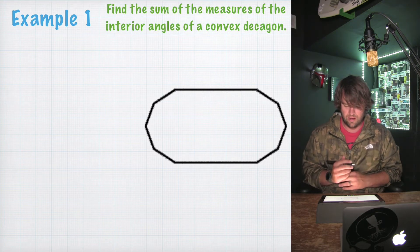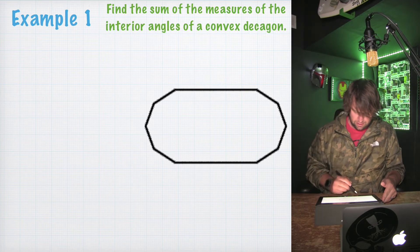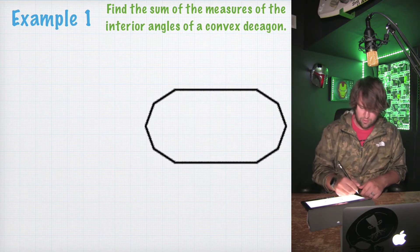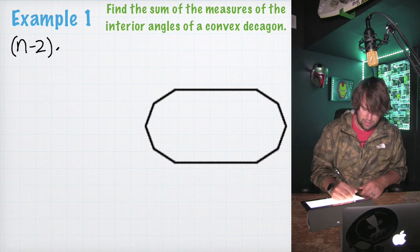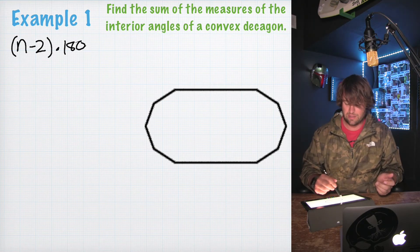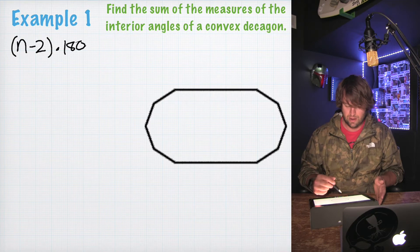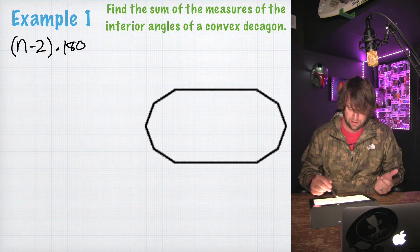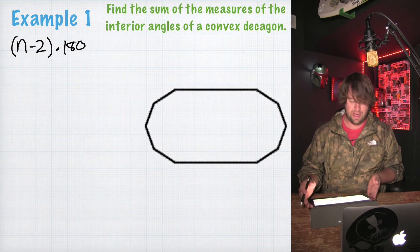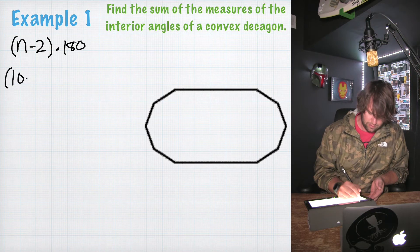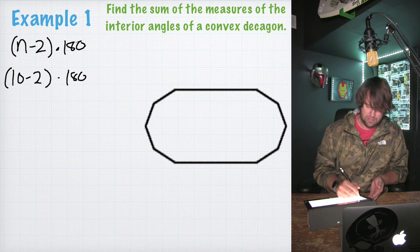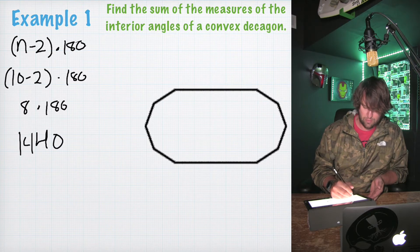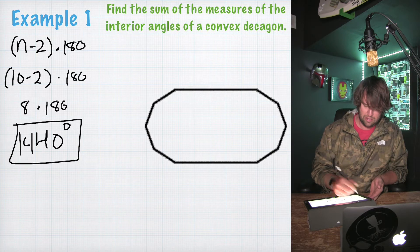Example 1: Find the sum of the measures of the interior angles of a convex decagon. We need to remember our equation: (n − 2) × 180. We count up the sides on our decagon — 1, 2, 3, 4, 5, 6, 7, 8, 9, 10. So we have 10 sides: (10 − 2) × 180 = 8 × 180 = 1,440 degrees total for the interior angles.